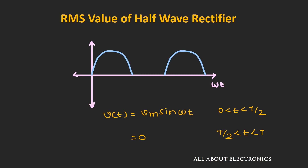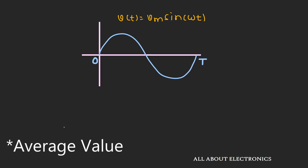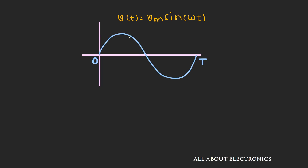Now let us understand about the average value. The average value of an AC signal is nothing but taking the average of all instantaneous values over a particular time period. For a given signal, V_average = (1/T) ∫₀ᵀ V dt. If an AC signal is symmetric about the horizontal axis, then the average over a full time period will be 0, so we find the average over only the half period T/2.